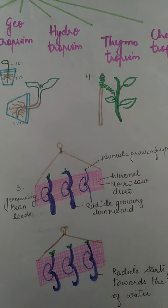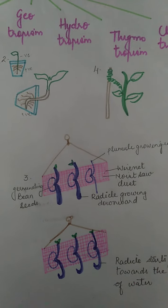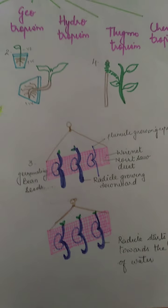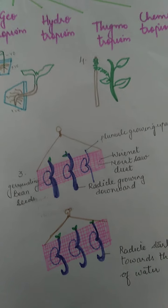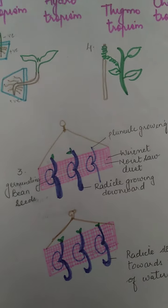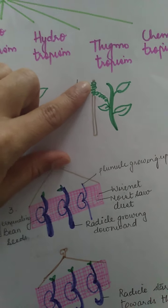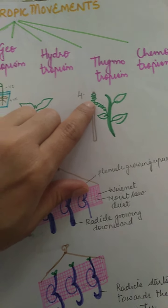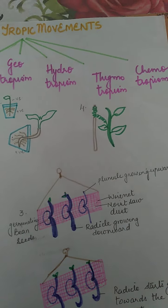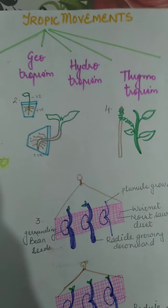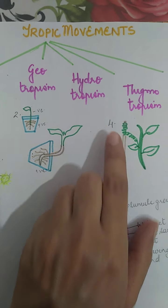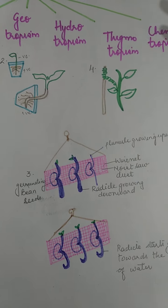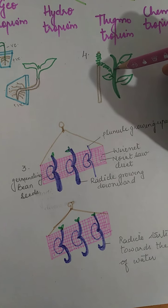The fourth is thigmotropism, which is the response to the stimulus of touch. We can see a number of plants with soft stems like pea plants, Cuscuta, and cucumber vines. They have a tendril, which is a coiled part that may come from the stem or the leaf. The stimulus is perceived by the tip of the tendril, then transmitted to the basal part, making the whole tendril sensitive to the stimulus.